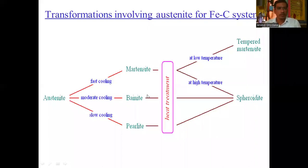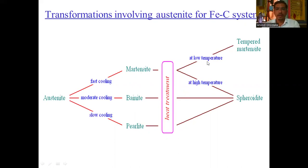So to summarize: fast cooling produces martensite, moderate cooling produces bainite, and slow cooling produces pearlite. Additionally, heat treatment at low temperature produces tempered martensite, and at high temperature, spheroidite is formed.